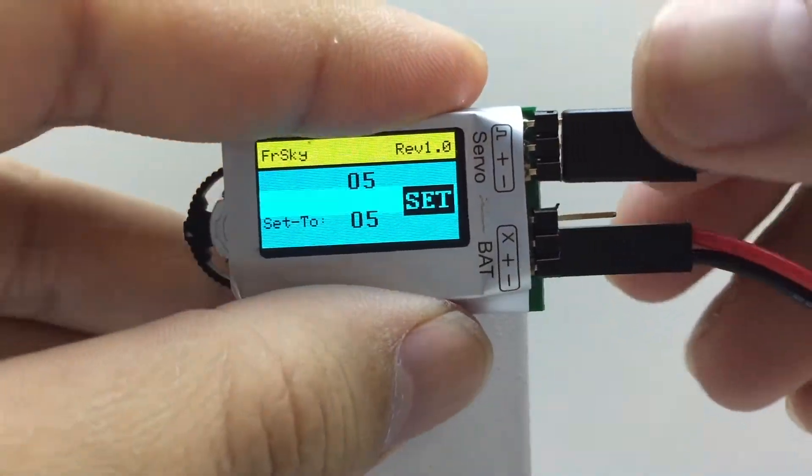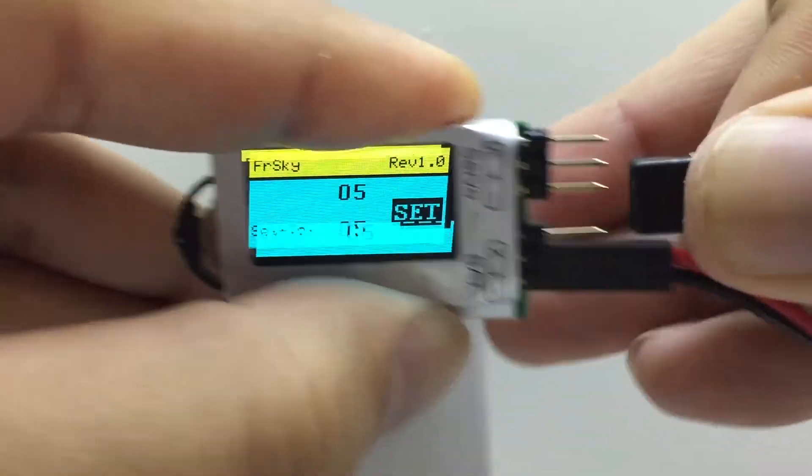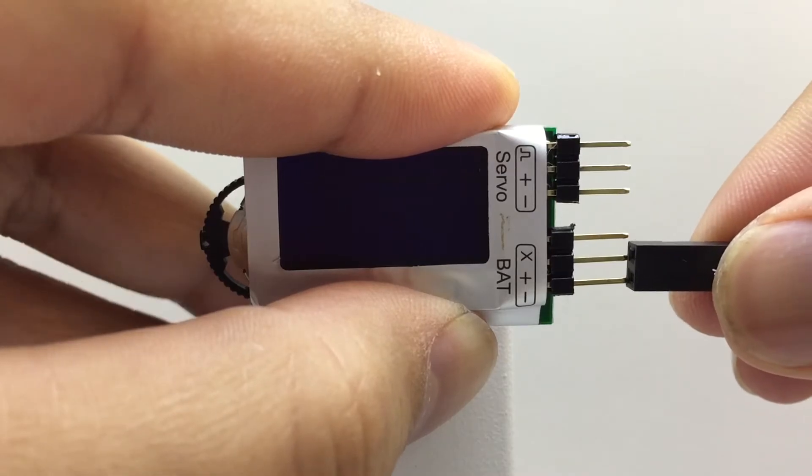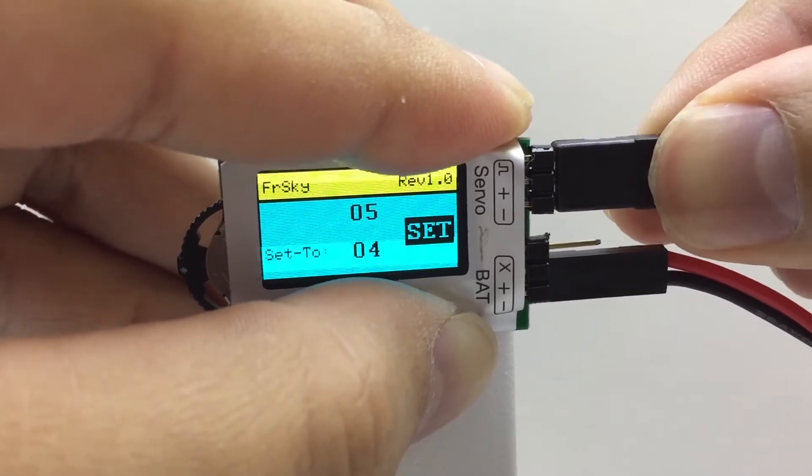Disconnect the sensor. Disconnect the power. Reconnect the power, and O4 may be displayed by default. Reconnect the sensor. Check the sensor ID has changed.